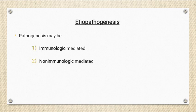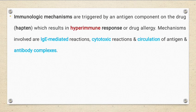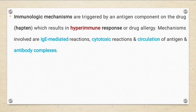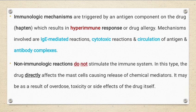Regarding etiopathogenesis, the reaction can be either immune-mediated or non-immune-mediated. In the immune-mediated type, the drug itself or a component inside it — known as an antigen — is identified by the immune system as non-self, and then a hypersensitivity reaction or drug allergy occurs. This mechanism involves IgE-mediated reactions, cytotoxic reactions, and circulation of antigen-antibody complexes, resulting in immunological reactions causing tissue destruction and ulcer formation in the oral cavity.